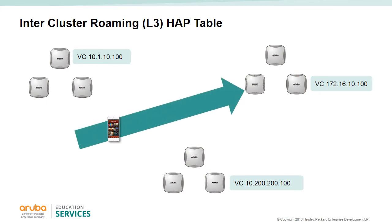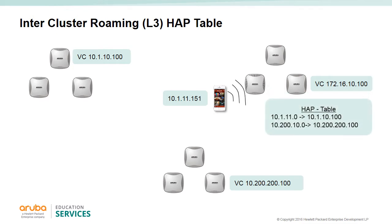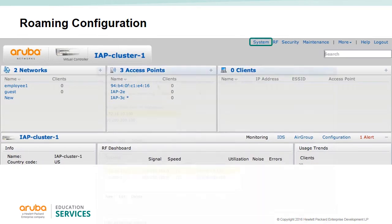The HAP table (home AP table) - roaming to another cluster is also referred to as L3 roaming. This requires a home AP table. These tables tell the APs what other AP clusters support the client subnet. The HAP table may be dynamically created with the mobility domain discovery procedure or manually added. In this example, the client associated to an SSID in cluster 1 gets an IP address 10.1.11.151, then roams to another AP cluster. The client is now in cluster 2 and will retain the same IP address.